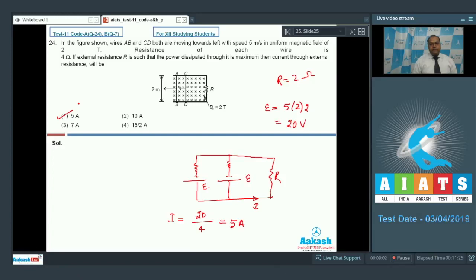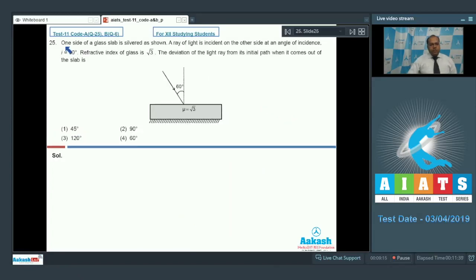Let's move to question number 25. In question number 25, one side of a glass slab is silvered as shown. A ray of light is incident on the other side at an angle of incidence I is equal to 60 degree. Refractive index of glass is root 3. The deviation of light ray from its initial path when it comes out of the slab is. So we know that the deviation from the glass slab is 0.